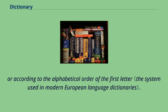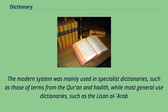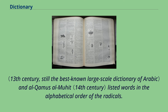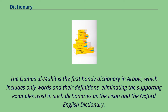Or according to the alphabetical order of the first letter. The modern system was mainly used in specialist dictionaries, such as those of terms from the Quran and Hadith, while most general-use dictionaries, such as the Lisan al-Arab and al-Qamus al-Muhit, listed words in the alphabetical order of the radicals. The Qamus al-Muhit is the first handy dictionary in Arabic, which includes only words in their definitions, eliminating the supporting examples used in such dictionaries as the Lisan and the Oxford English Dictionary.